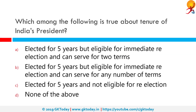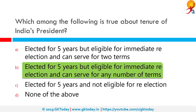Which among the following is true about the tenure of India's president? The correct answer is he is elected for five years but eligible for immediate re-election and can serve for any number of terms. The president may remain in office for a tenure of five years as stated by Article 56, Part 5 of the Constitution of India. In the case where a president's term of office is terminated early, or during the absence of the president, the vice president assumes office.